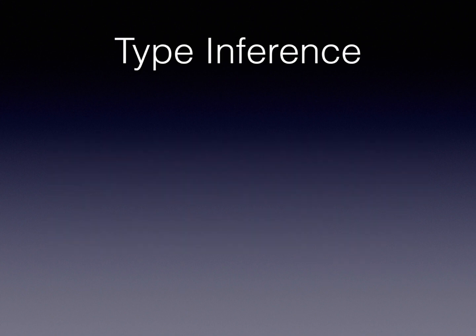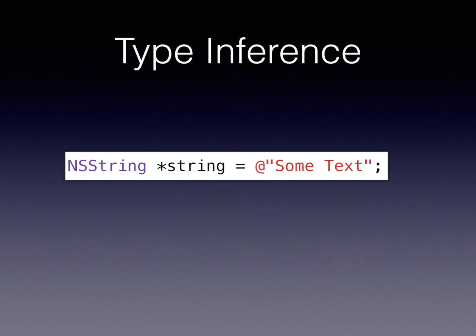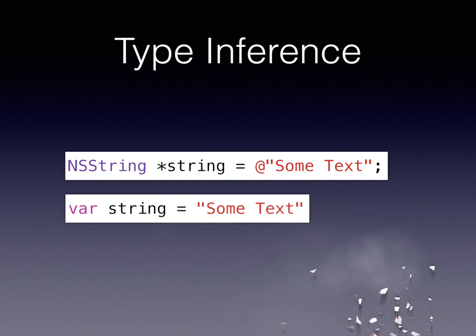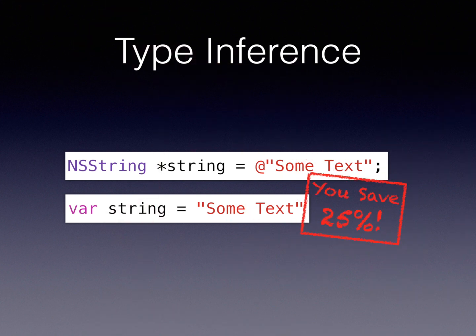Type inference is another awesome thing. In Objective-C you write NSString *string = @"some text". You could write the semantically equivalent in Swift by declaring a variable named string, giving it type String, and assigning something. But the compiler knows that 'some text' is a string, so you don't need to declare the type. This small trick - inferring the type from what you assign - saves you 25% of your keystrokes.